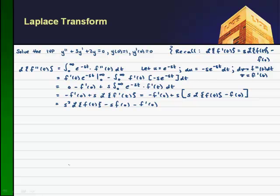Now we can take the Laplace transform of the ODE. Taking the Laplace transform of the left-hand side, we just have the Laplace transform of y double prime, which is very similar to the f double prime result. So I'll write this as s squared times the Laplace transform of y of x, minus s times y of zero, minus y prime evaluated at zero. All of this is just the y double prime term.